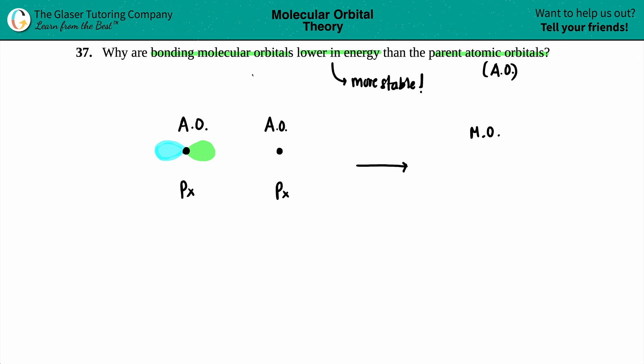So if we're making specifically a bonding molecular orbital, this means that these atomic orbitals have to be coming together in phase, which means that the colors, when they come together, they have to be matching.